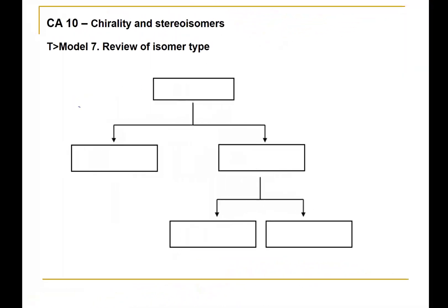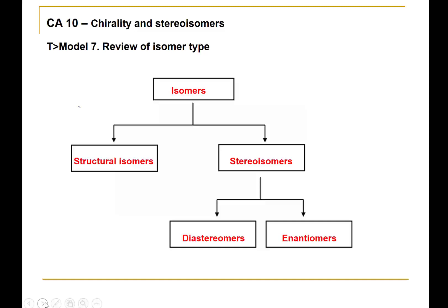As a last feature of this video, I'd like to review a chart that ties together many of the ideas introduced in this ChemActivity, showing visually the relationship between different kinds of isomers. Starting from the top, we have isomers, and there are two major classes: structural isomers and stereoisomers. Within stereoisomers, there are two kinds: diastereomers and enantiomers.